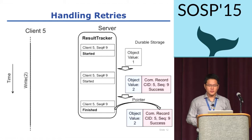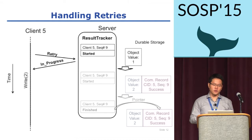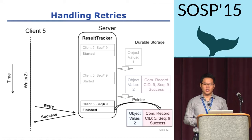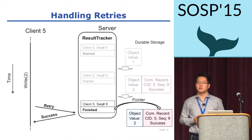Let's see how Riffle handles client retries. Riffle assumes that a client retry can arrive at any time without any restrictions. If a client retry request arrives after resultTracker has marked the RPC as started, then the RPC is in progress, and the client should wait for the ongoing execution and retry later. If a retry request arrives after the RPC tracker has marked the RPC as finished, the server returns the saved result from the original execution. With this retry handling mechanism, we achieve exactly-once semantics.